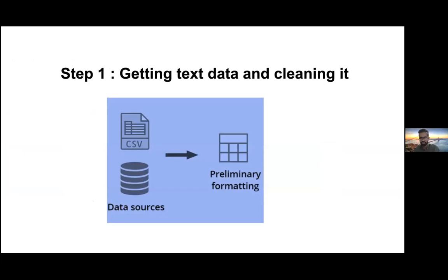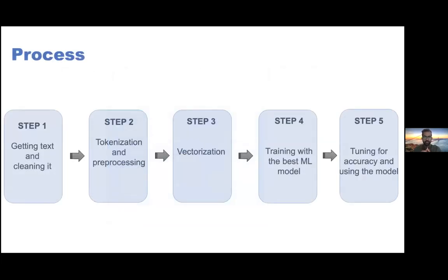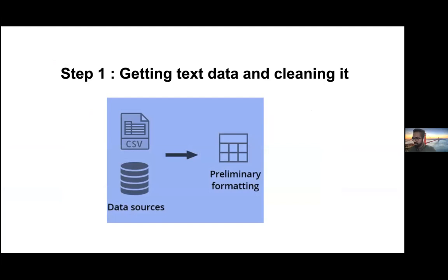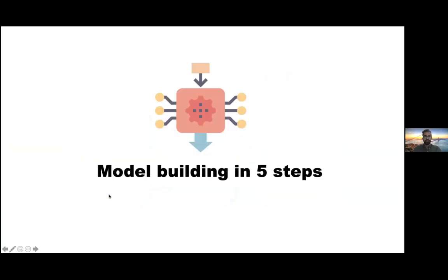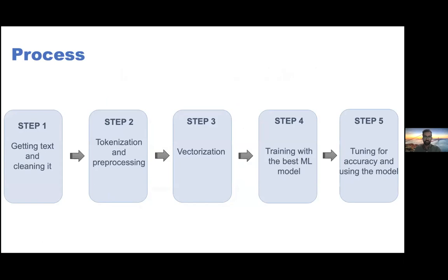The process I'm explaining today is text classification. There are five steps. The first step is getting the data and cleaning it. Data can be in many forms — a JSON or CSV file, any format. Once you have the text, how do you clean it and preprocess it so you can feed it to the model in the correct format? A lot of people directly jump to the model building aspect, but when it comes to machine learning or data science, probably 70% or more goes into actually cleaning the data or getting it in the right format.